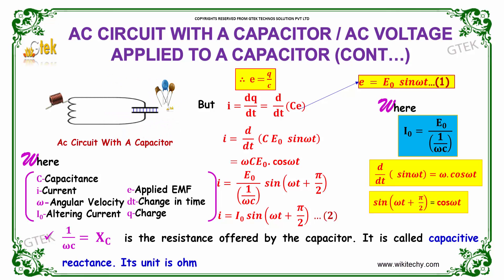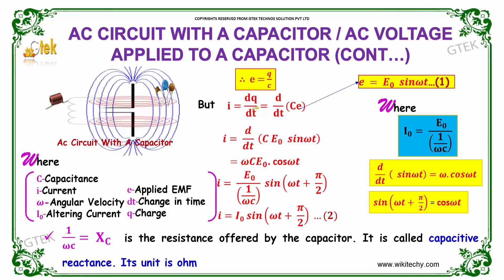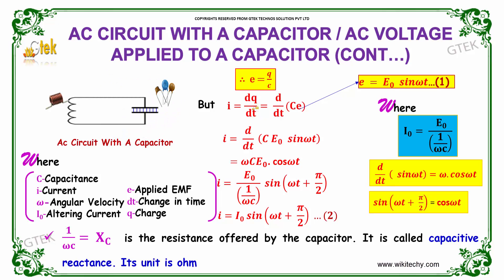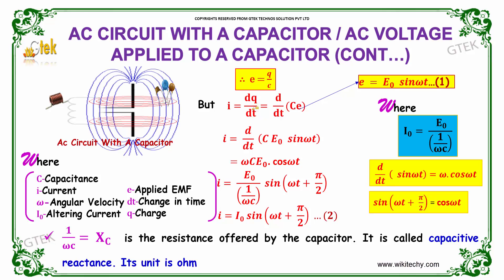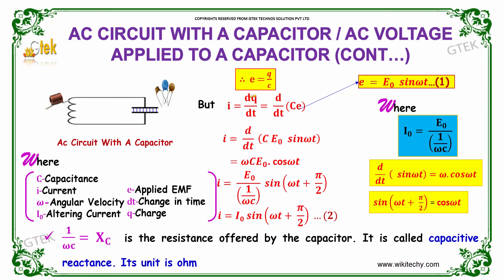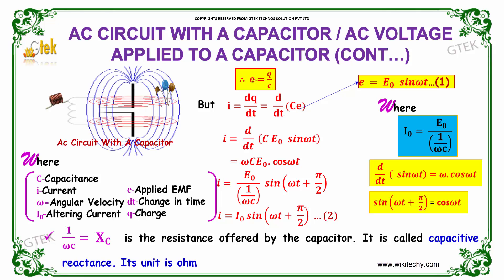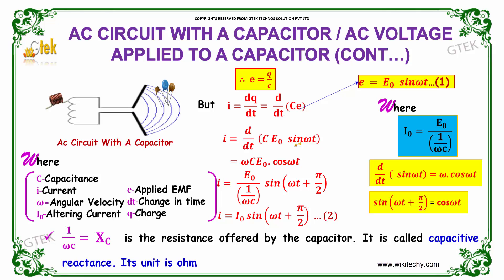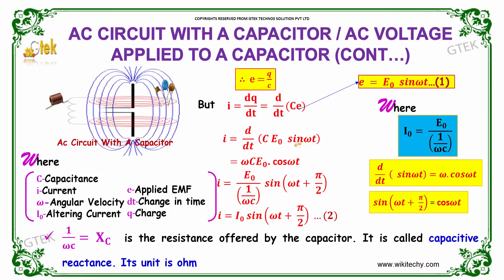As indicated, E is equal to Q by C. So I is equal to dQ by dt, the change in charge per time. D by dt of replacing your Q by E into C, you will be getting C into E0 into sin ωt with the change in frequencies.